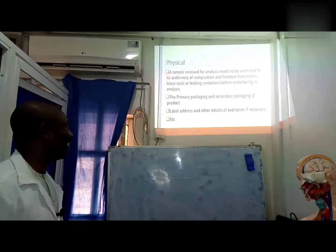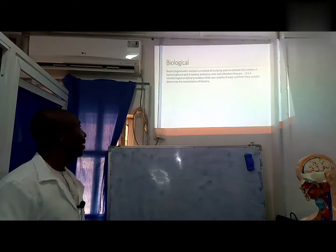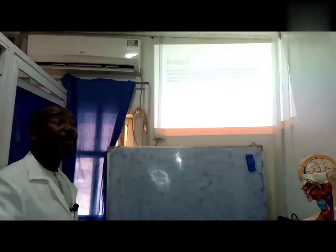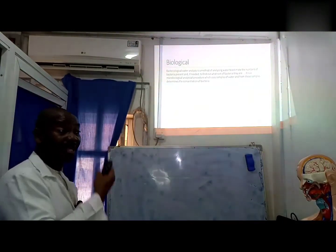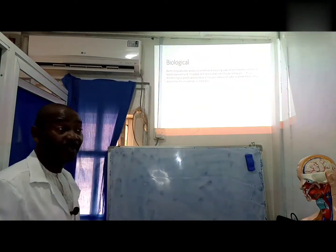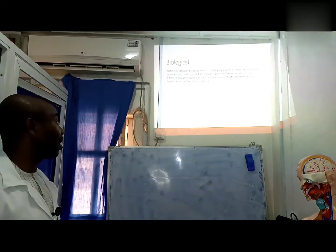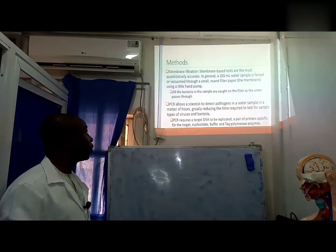Before we move ahead, we look at the physical characteristics first. Once it's found wanting, they are going to stop there. Then biological—what sort of bacteria they have. Like we said earlier, all the list of bacteria we listed before, gram negative, gram positive, we want to be sure that it poses health risk to the users.